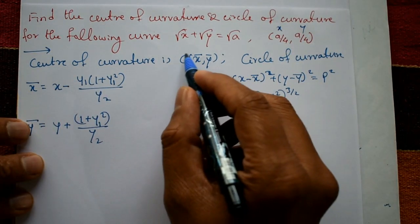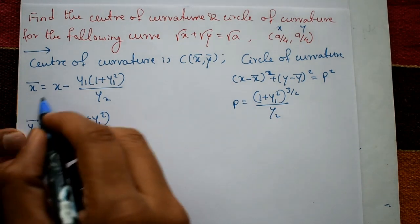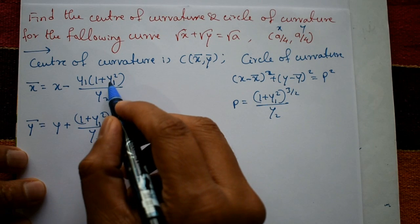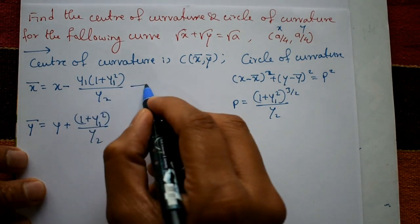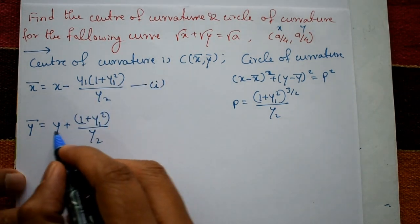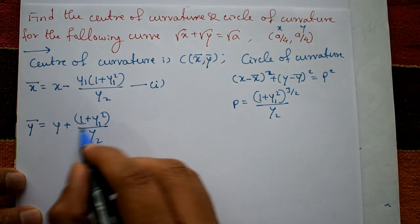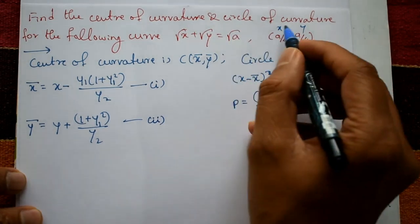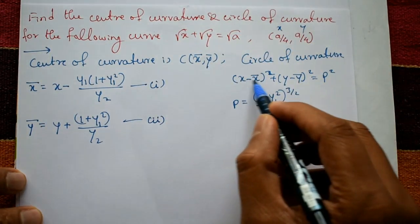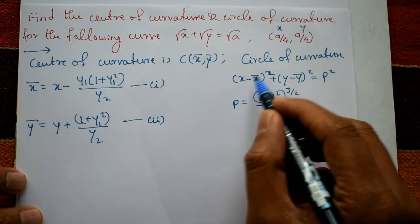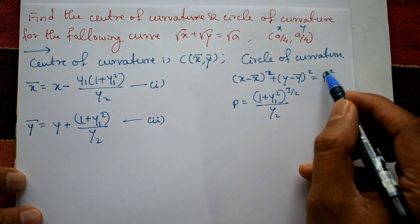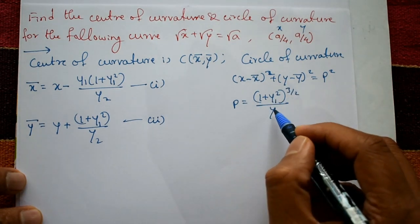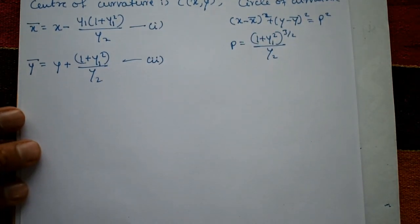The centre of curvature is (x̄, ȳ). The formula for x̄ is: x̄ = x − y1(1 + y1²)/y2, this is equation number 1. And ȳ = y + (1 + y1²)/y2, this is equation number 2. The circle of curvature is: (x − x̄)² + (y − ȳ)² = ρ², where ρ = (1 + y1²)^(3/2) / y2.